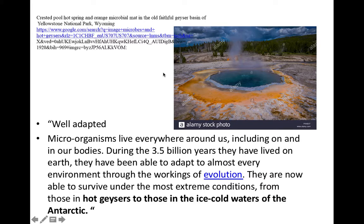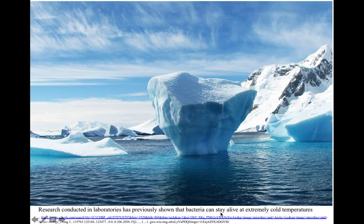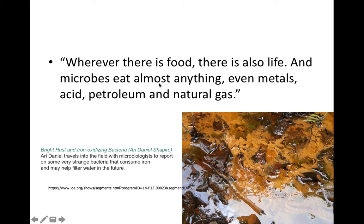Looking at microbial diversity — they're so well adapted. Microorganisms live everywhere around us, including on and in our bodies. During the 3.5 to 3.6 billion years they've lived on Earth, they've been able to adapt to almost every environment through the workings of evolution. Biological evolution is a change in the genetic makeup of a population of organisms over time. Microbes are now able to survive under the most extreme conditions, from hot geysers to ice-cold waters of the Antarctic. We find microbes everywhere, even deep in the Earth. Microbes eat almost anything — even metals, acid, petroleum, and natural gas — giving them great capacity to help in bioremediation: the ability to take toxins and pollutants and detoxify them.